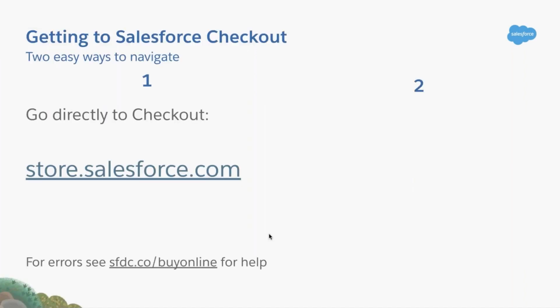There are two easy ways to get to Salesforce Checkout. First, you can enter store.salesforce.com into your browser and log in with your Salesforce credentials. If you encounter an error, it's likely because of a missing permission. Your admin will need to add the manage billing permission to your profile or permission set. For more details, see the knowledge article at sfdc.co/buyonline.